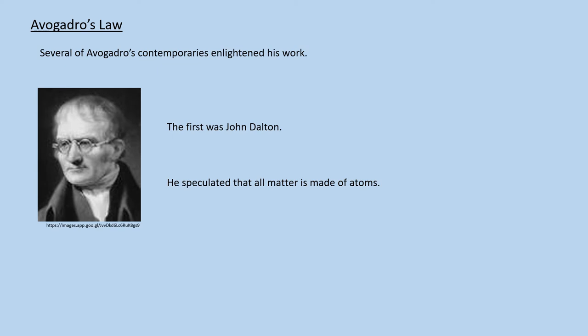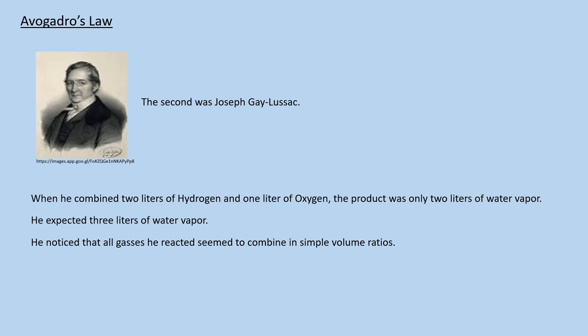Several contemporaries of Avogadro, John Dalton and Joseph Gay-Lussac, were also studying matter and gases. Dalton postulated that all matter is made of atoms and that all atoms in an element are identical. Joseph Gay-Lussac noticed that when he combined two liters of hydrogen with one liter of oxygen, the result was only two liters of water vapor. He had anticipated three liters. Two hydrogen plus one oxygen equals three. He further noted that all gases he reacted seemed to react in simple volume ratios.